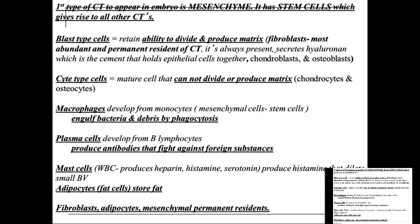Mast cells are a type of white blood cell. They produce heparin, histamine, and serotonin. Your white blood cells can produce serotonin, which is probably why when you're not feeling well, you're not feeling happy. What mast cells do by producing histamine is dilate small blood vessels, allowing more blood through — temperature rises because blood is hot and it rushes nutrients to the area and flushes away debris. Heparin thins the blood, so with dilated vessels and a blood thinner, it really helps to clear out the body.